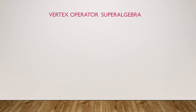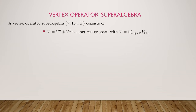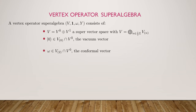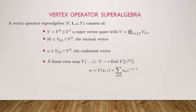What's a vertex operator superalgebra? Robert mentioned the definition of vertex operator algebra, and we'll just generalize it to the super case. It's a super vector space with a nice grading — in our case, half-Z graded. A special vector called the vacuum vector is an even vector of degree zero. Another special vector called the conformal vector gives us a representation of the Virasoro algebra. And a linear even map eats elements in V and produces power series with coefficients in endomorphisms of V, with poles in Z but only finitely many negative powers.